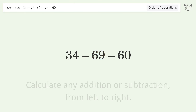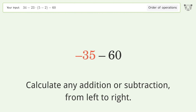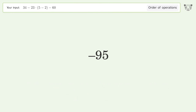Calculate any addition or subtraction from left to right: 34 minus 69 equals negative 35, and negative 35 minus 60 equals negative 95. And so the final result is negative 95.